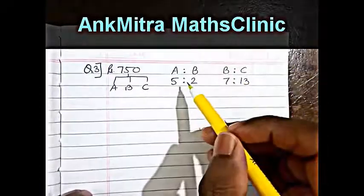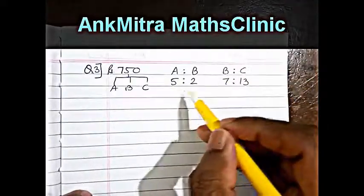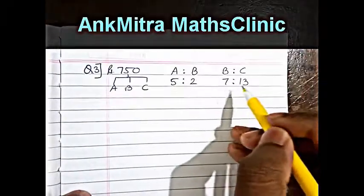So for that we will have to actually calculate the share received by each one of them. So to do that we will have to bring this ratio in the form of A is to B is to C.